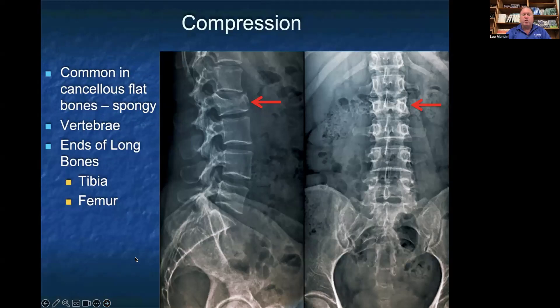Compression fractures are common in cancellous flat bones — the spongy bones in the body. Vertebrae are a common site of compression fractures. Osteoporosis or osteopenia increases the risk of compression fractures. You can also see a compression fracture at the ends of long bones, such as the tibia or the femur. Shown here are images of a compression fracture of a lumbar vertebra.